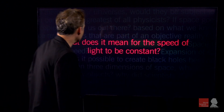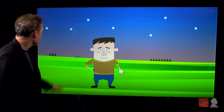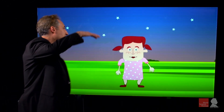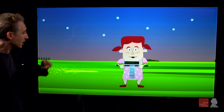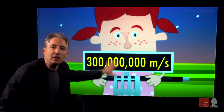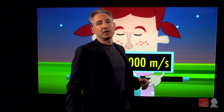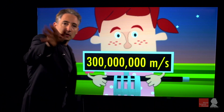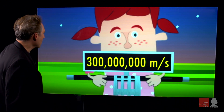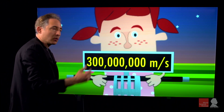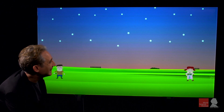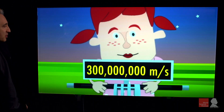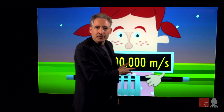So let me show you visually what that would look like. Let's imagine two characters: George with a laser pointer, and Gracie with a device that can measure the speed of light. George fires light toward her and she measures it, getting the familiar, well-known answer of 300 million meters per second. Now if Gracie runs away, you'd think the speed she measures would be less — but she gets exactly 300 million meters per second, unchanged.